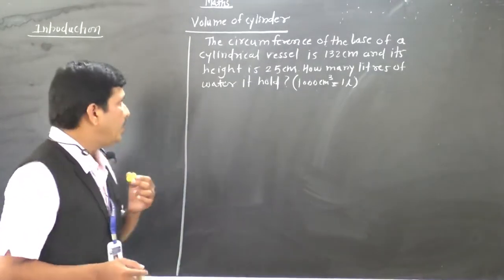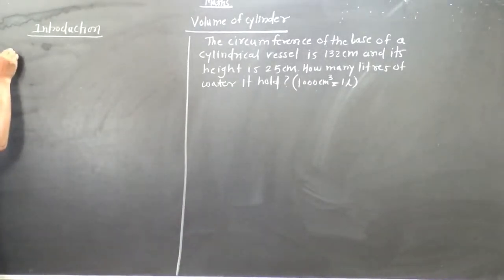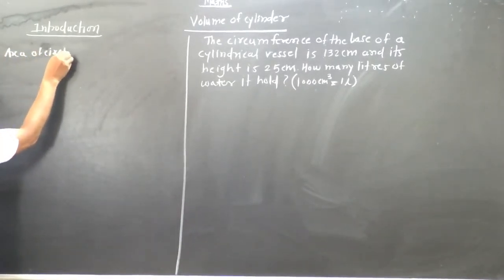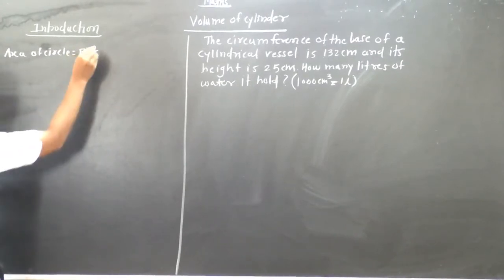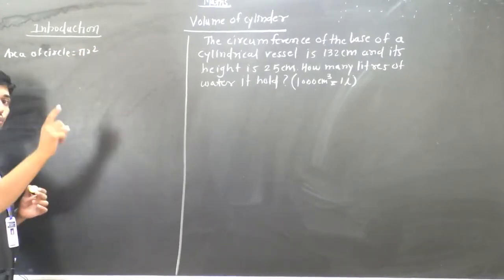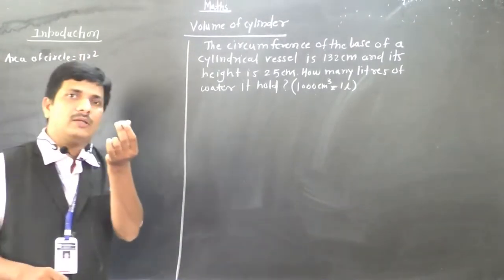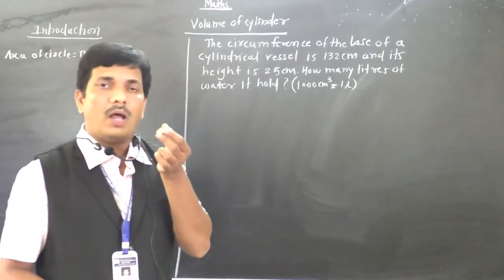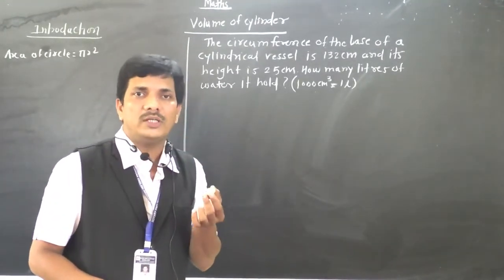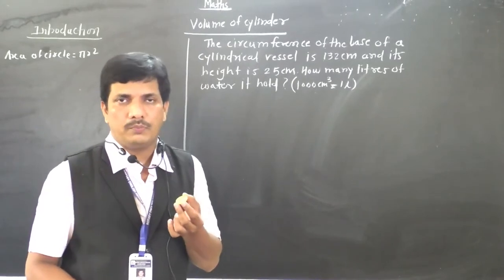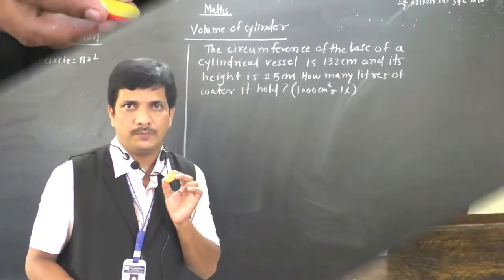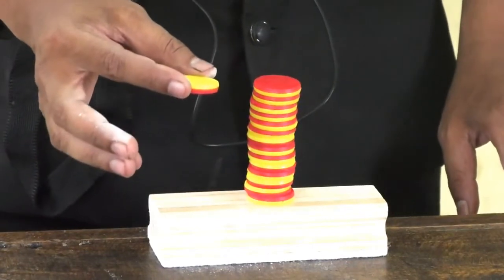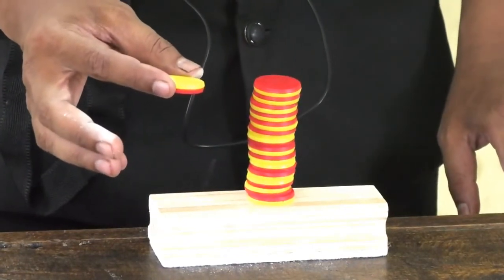So the area of a circle is equal to pi r square. When it is only a circle, that time we take directly pi r square. The area of this ring is pi r square.